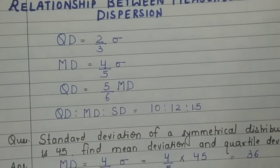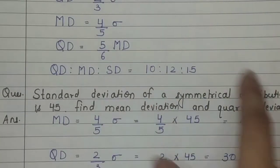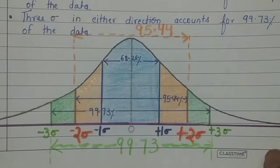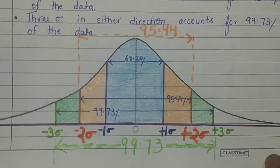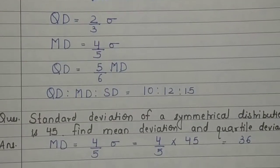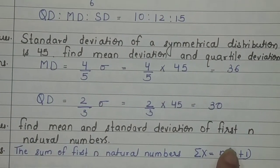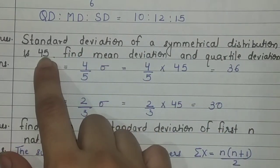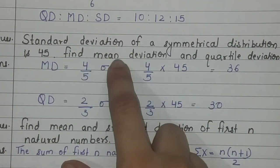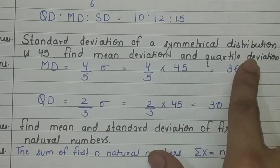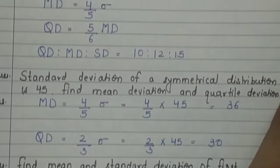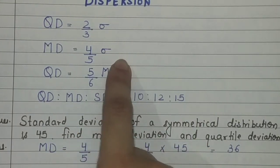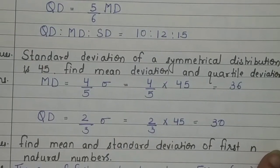This relationship holds true only for a symmetrical distribution — this curve also represents a symmetrical continuous probability distribution. Now let's apply this: given that the standard deviation of a symmetrical distribution is 45, we are asked to find the mean deviation and quartile deviation. These equations apply since it is a symmetrical distribution, so we can easily calculate the answers.